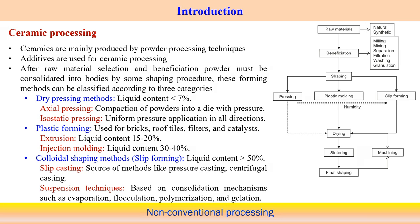We start with ceramic processing because most non-conventional manufacturing processes are associated with ceramic components. Ceramics are mainly produced by powder processing techniques. Sometimes we use additives to bind ceramic particles. After raw material selection, the powder must be consolidated into shaped bodies. After that, we can perform sintering or other operations to manufacture the ceramic component.